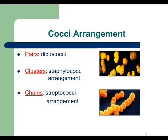Round cells can also form clusters, like grape clusters, and as an example we use Staphylococcus species — they all form clusters. The last arrangement is chains, which we call strepto. As an example we can use Streptococcus species, because most of them form chain arrangements.